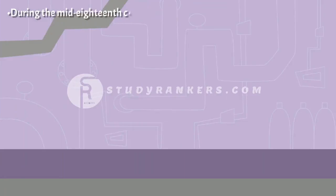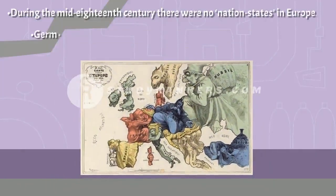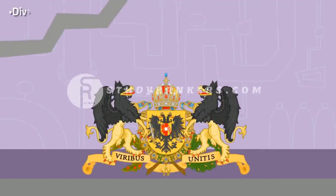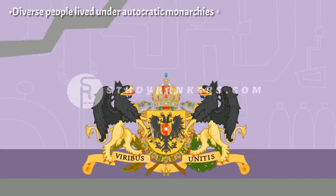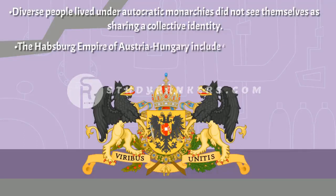During the mid-18th century, there were no nation states in Europe. Germany, Italy, and Central European lands were divided into kingdoms, duchies, and cantons whose rulers had their autonomous territories. Diverse people lived under autocratic monarchies who did not see themselves as sharing a collective identity or a common culture. For example, the Habsburg Empire of Austria-Hungary included French, Italian, and German-speaking people.